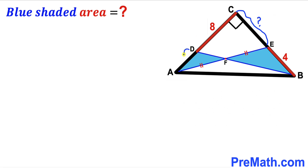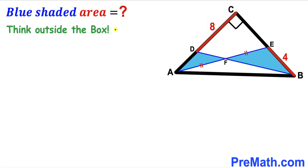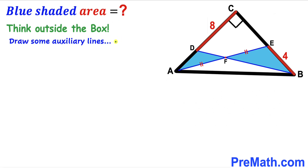Likewise, segment AD is unknown as well. So we are going to think outside the box to make our job simple — we are going to draw some auxiliary lines and connect these two points D and E.